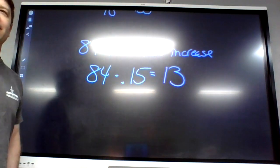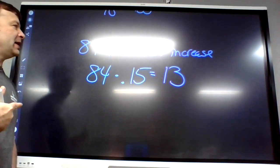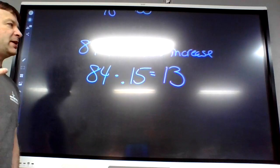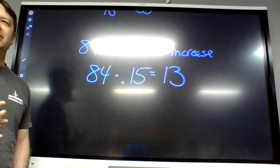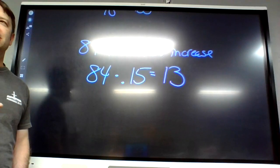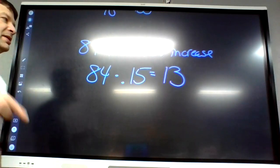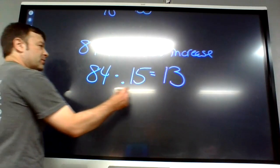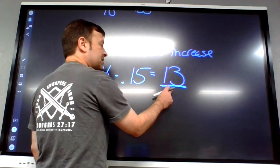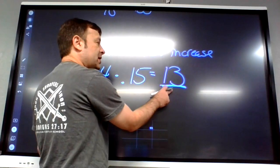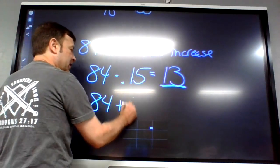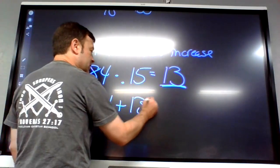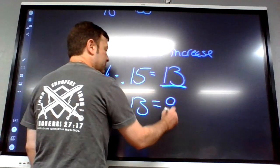If we're increasing 84, the answer should be more than 84 — 13 tells us how many kids it's going to go up by. That's the change, the increase. Since it's supposed to go up by that much, you add it, so there'd be 97.